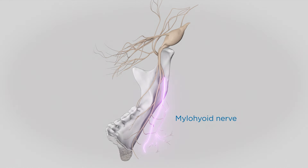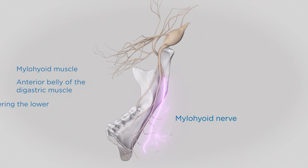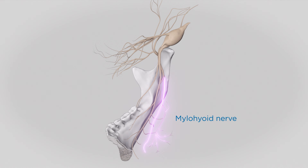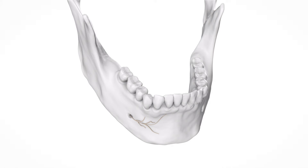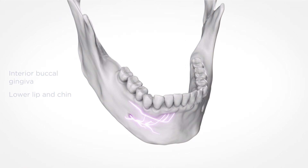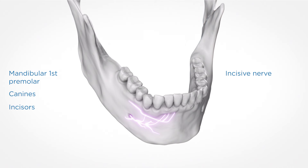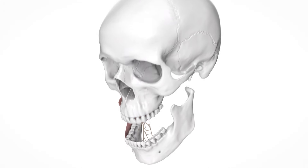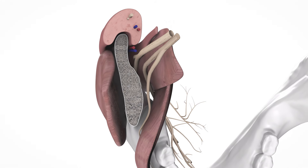The mylohyoid nerve branches off just before the inferior alveolar nerve enters the mandible, providing motor function to the mylohyoid muscle and the anterior belly of the digastric muscle. It often innervates the skin covering the lower chin and occasionally provides sensation to the mandibular teeth as an accessory nerve. The mental nerve emerges as a lateral branch of the inferior alveolar nerve, passing through the mental foramen to innervate the anterior buccal gingiva and the lower lip and chin. After exiting the mental foramen, the inferior alveolar nerve continues anteriorly within the mandibular incisive canal as the incisive nerve, innervating the mandibular first premolar, canine, incisors, and adjacent gingival tissues.